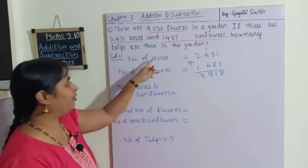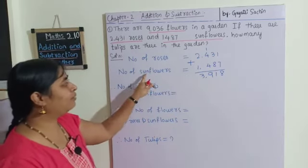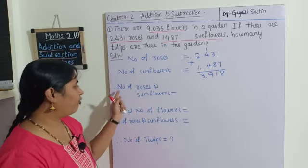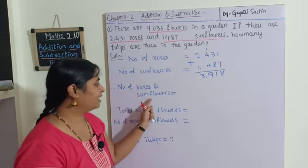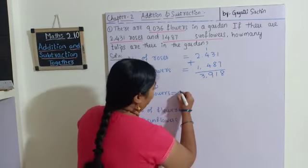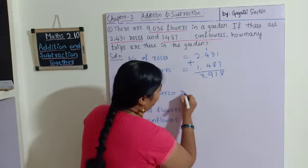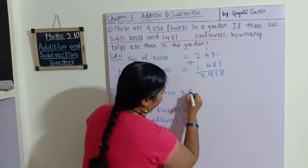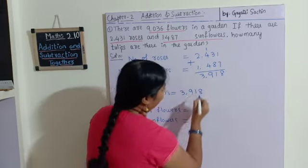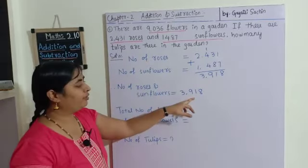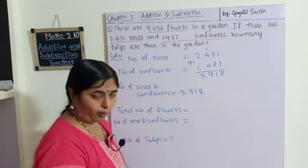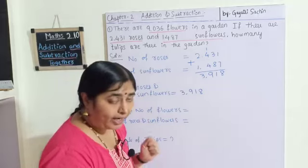2 plus 1 is 3. So the number of roses and sunflowers together gives us 3918. Both roses and sunflowers together total 3918.